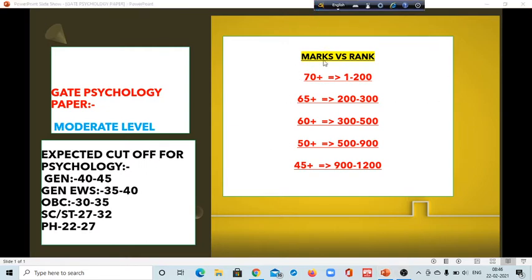You can see this part, marks versus rank. In the left side column I have put marks, and on the right side I have put the ranking. If your score is above 70, you can expect your rank in GATE 2021 to be 100 to 200. Those who are checking their answer, if your score is above 70, you can expect your ranking from 1 to 200.